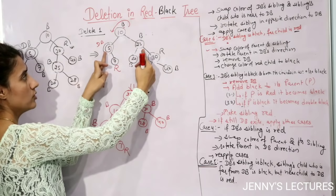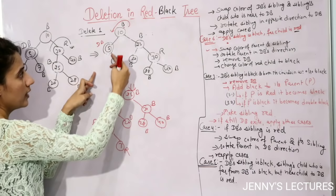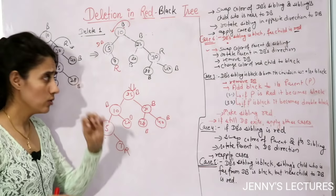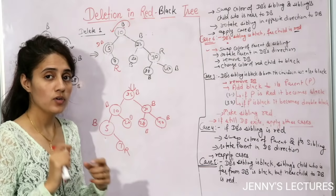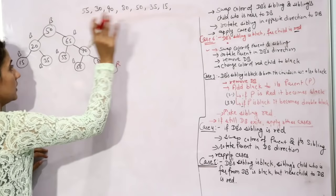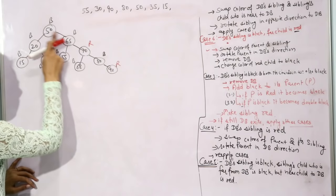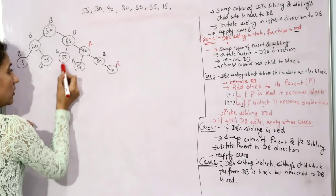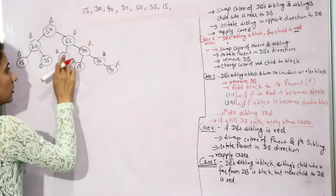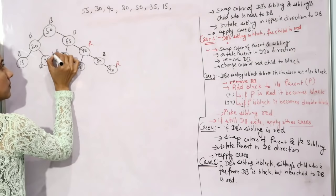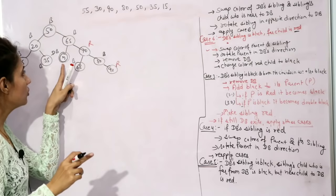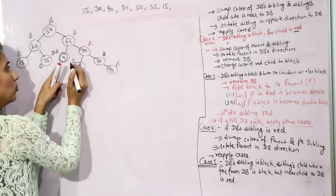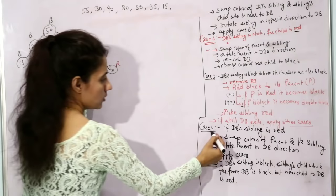Full example walkthrough: starting with a red-black tree, delete 55. Search: 55 is found as a black leaf. Replace with nil — becomes double black. Check sibling: sibling is red. Apply Case 4: swap colors of parent and sibling, then rotate parent in double black's direction.